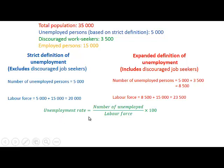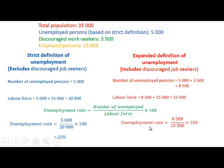Using the formula — number of unemployed divided by the labor force times 100 — the strict definition unemployment rate is 5,000 divided by 20,000 times 100, which gives us 25 percent. According to the expanded definition, the unemployment rate is 8,500 — which includes the discouraged work seekers — divided by 23,500 times 100, which equals 36.17 percent.